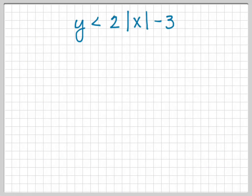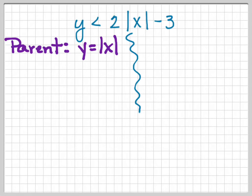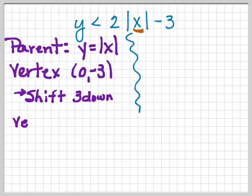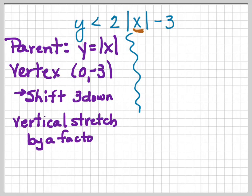Let's try an inequality: y is less than 2 times the absolute value of x minus 3. The parent is y equals absolute value of x. The vertex is 0, negative 3 — there's nothing associated with the x, so it's x plus 0, giving us 0 minus 3, shifted 3 down. There's a vertical stretch here because there's a number out in front of the absolute value — a vertical stretch by a factor of 2.